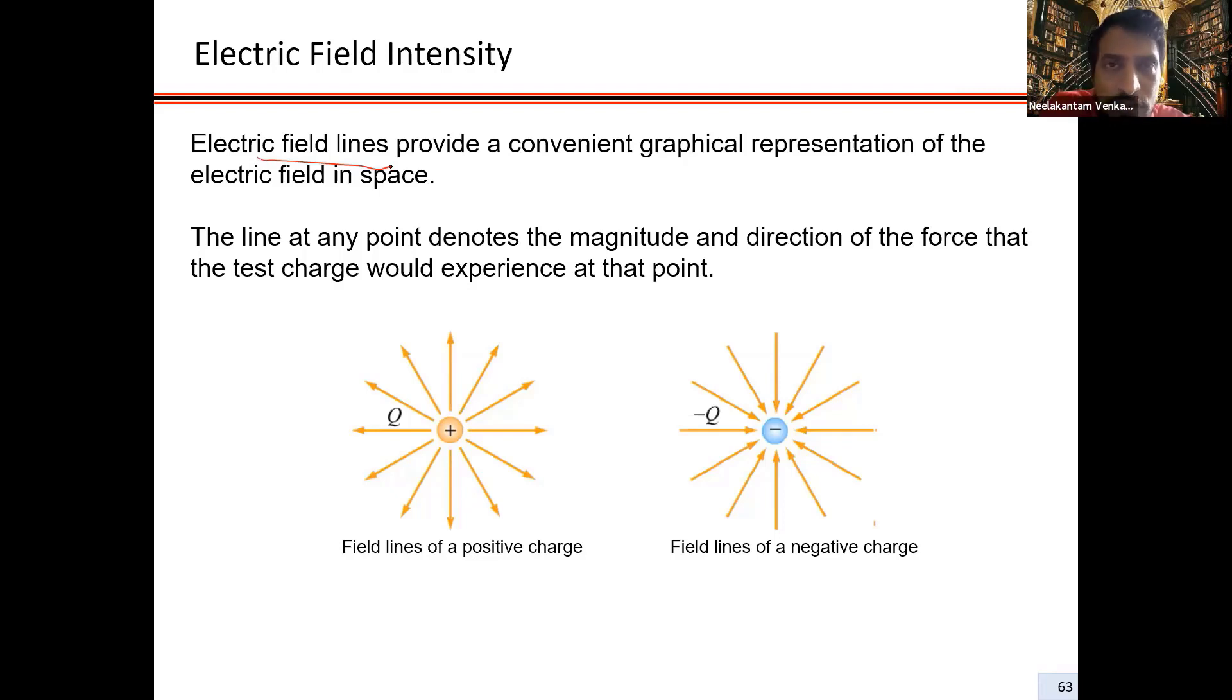How does it look for the two different charges, the plus and the minus? If I have a plus Q charge and I bring in plus one Coulomb here, what's the direction it's going to move? It's going to move away from it.